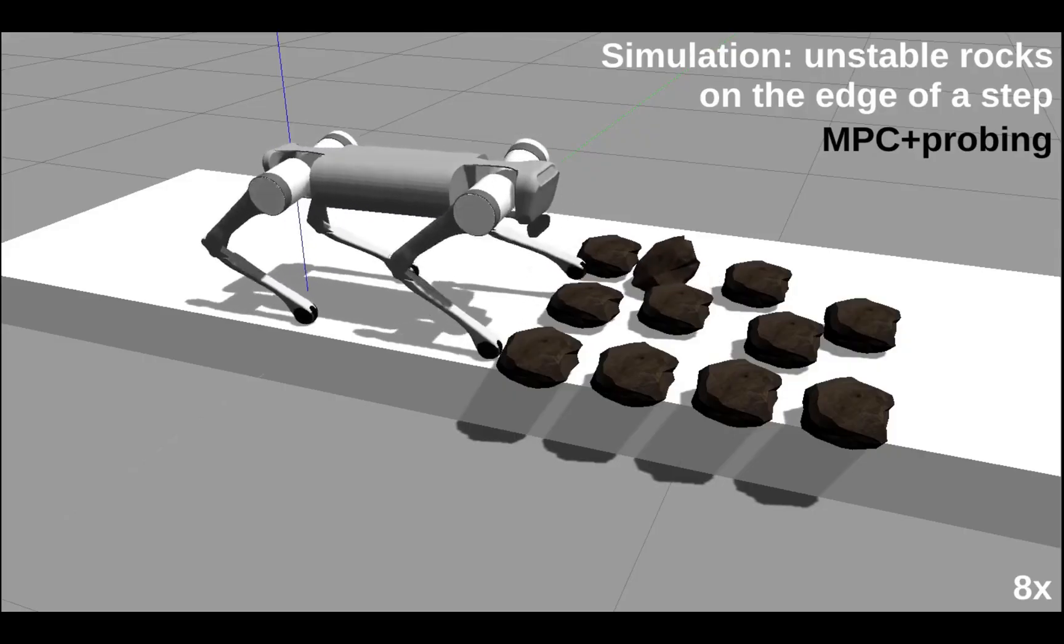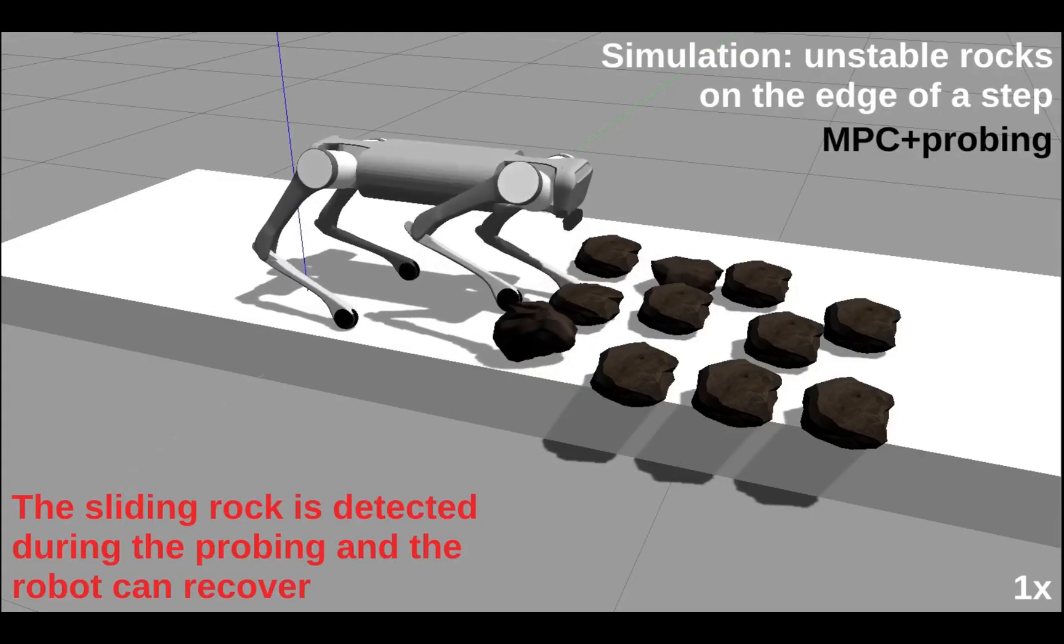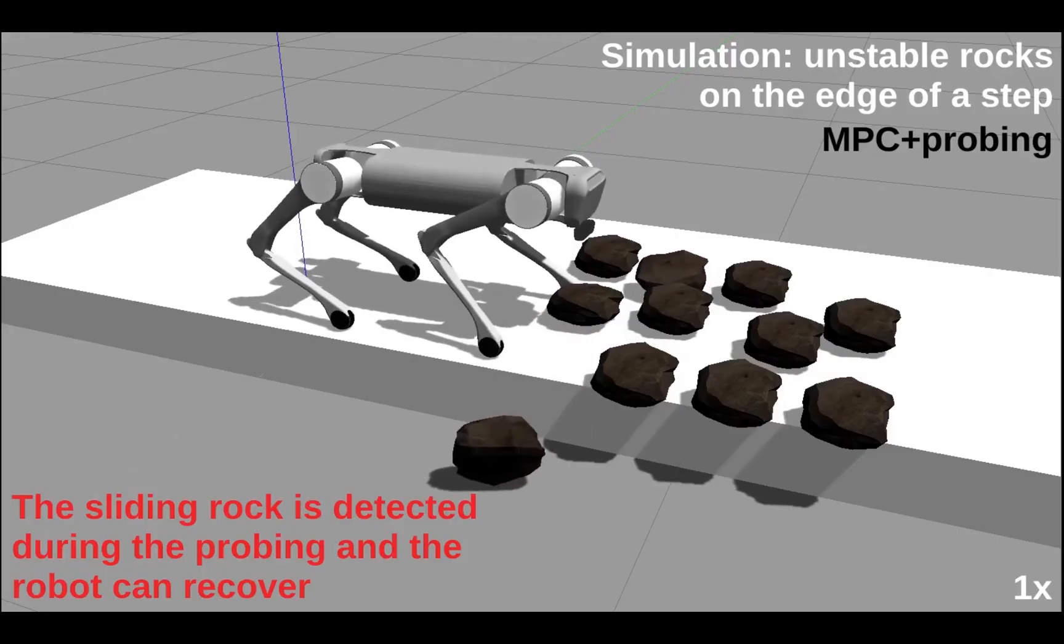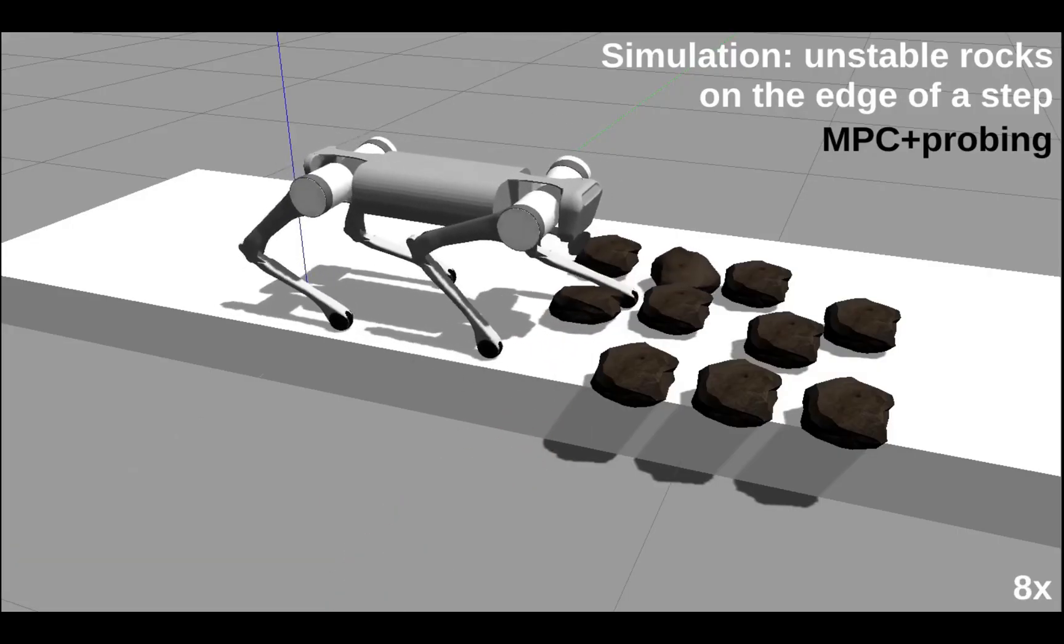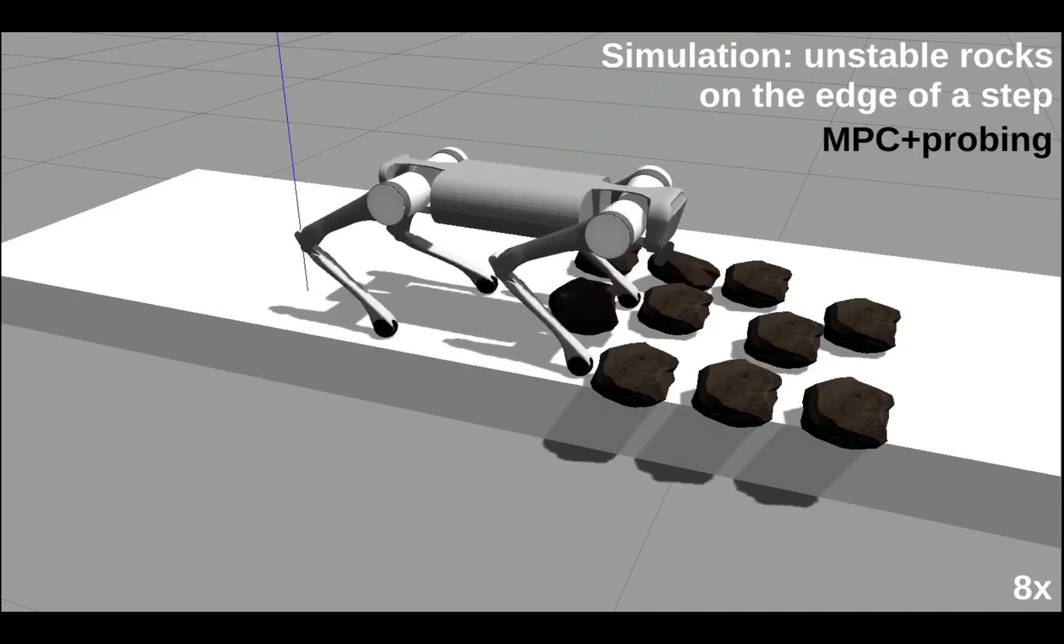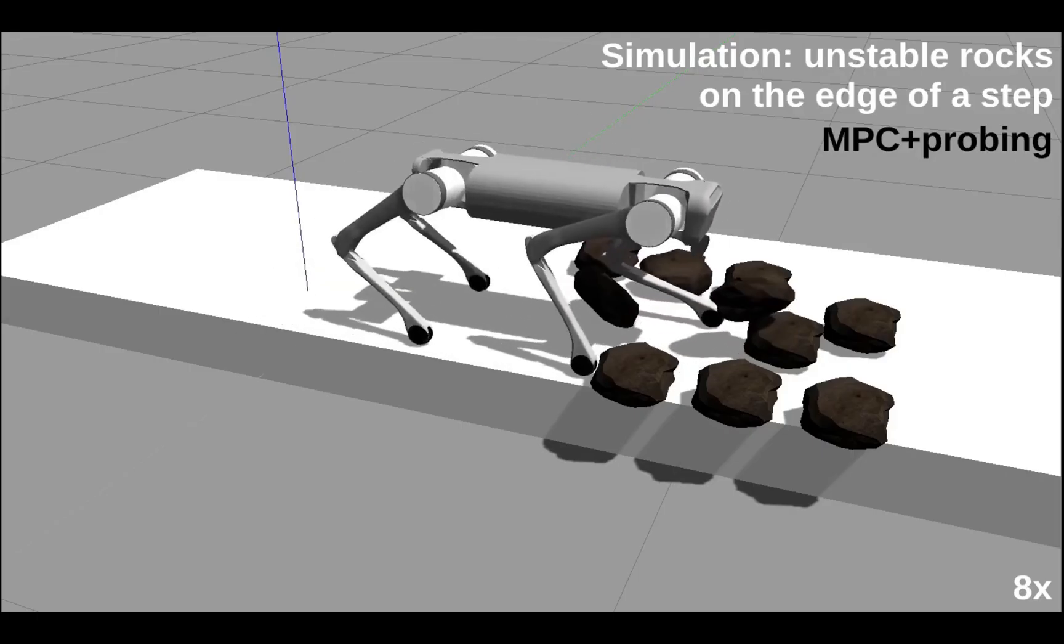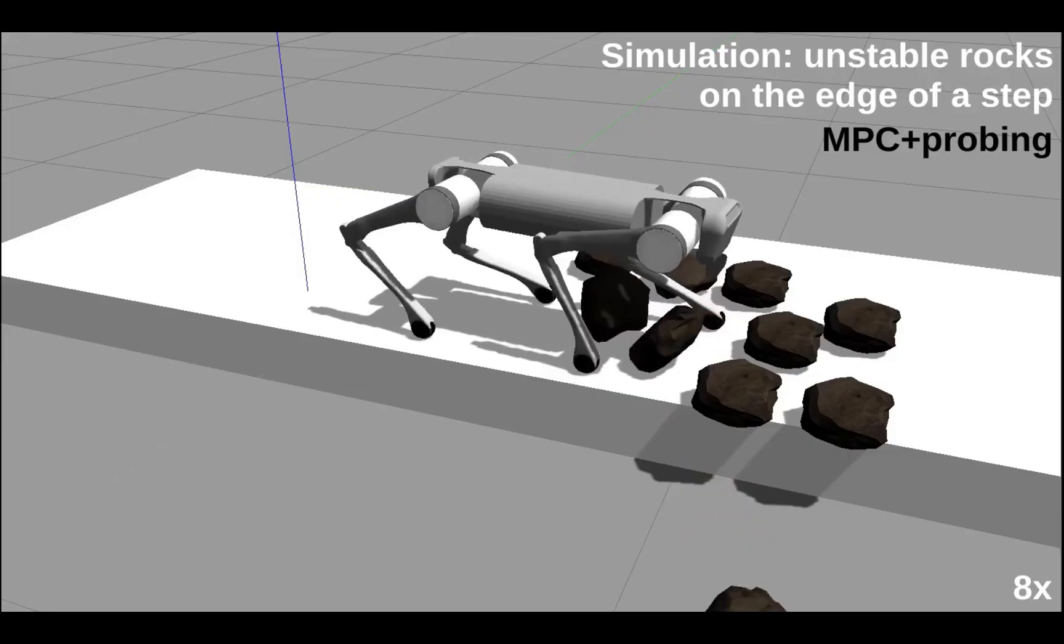With the framework active, probing happens first. The robot detects the sliding rocks and recovers its position. It retracts the foot, lowers the base, to return the center of mass inside the support polygon. This is possible thanks to the framework's trade-off between interaction force tracking and robot stability.